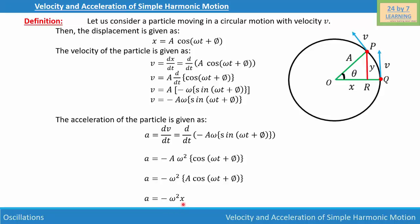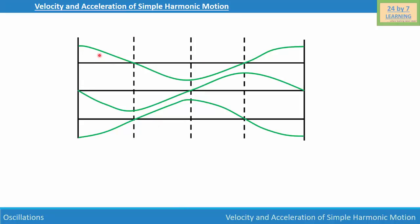Now let's graph these three functions. The first graph is displacement, the second is velocity, and the third is acceleration. All three graphs have different phases — when displacement is maximum, velocity is zero and acceleration is negative. This is how displacement, velocity, and acceleration of simple harmonic motion are related to each other.